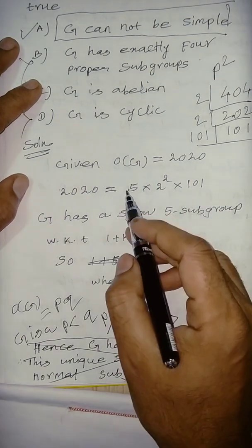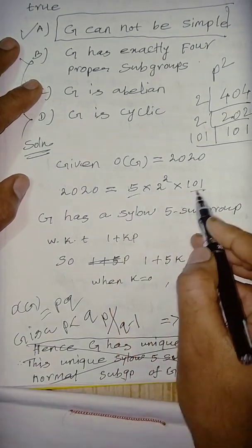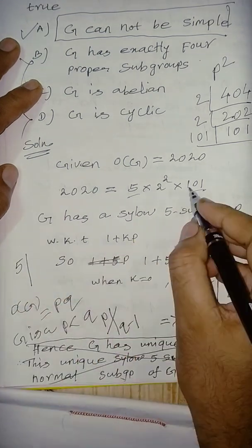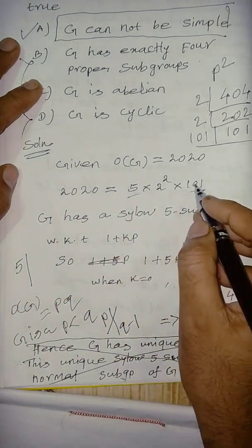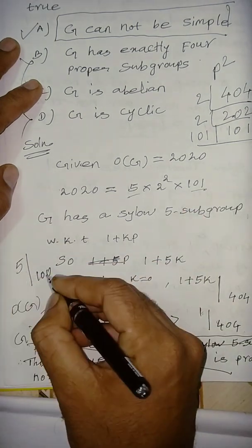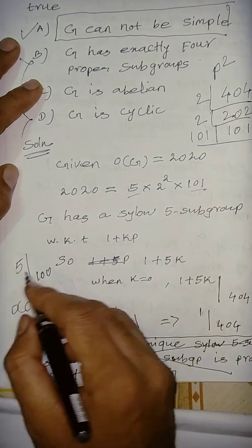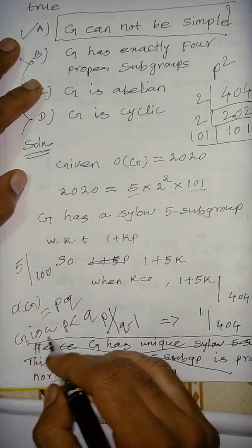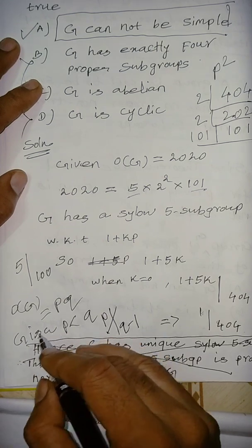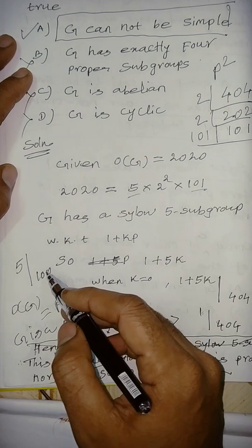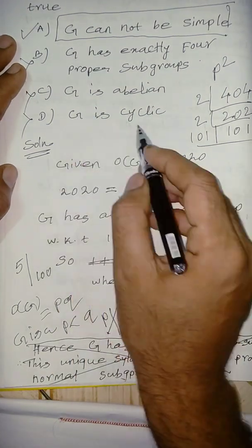p does not divide q-1, then we can say G is cyclic. So it is not possible here. Suppose we take 5 and 101, right? So p, this is q. q-1, I take this p, this is q, q-1, that is 100. So it divides, which is divides. So not cyclic.